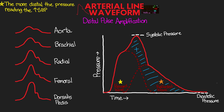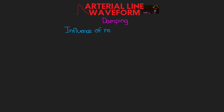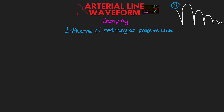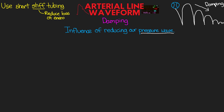Now that we understand our normal pressure tracing, we need to discuss situations where we would see abnormal pressure tracings. The first of these has to do with something we call damping. Damping is essentially the influence of reducing our pressure tracing. The simplest way to think about this is like the loss of energy from a bouncing ball — as a ball is bounced, it loses energy each time and each successive bounce is smaller. We use short, very stiff tubing from the arterial catheter to the pressure transducer to record our patient's blood pressure waves. This stiff tubing helps to reduce the loss of energy, or the damping of that pressure wave as it travels along the tubing. The length of the tubing can also play a role, as the longer the tubing, the more damping that we see.